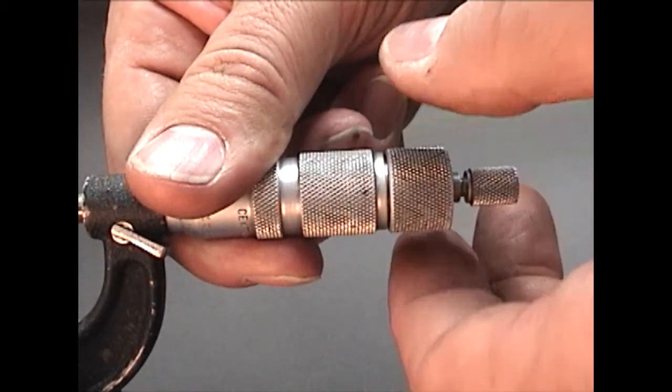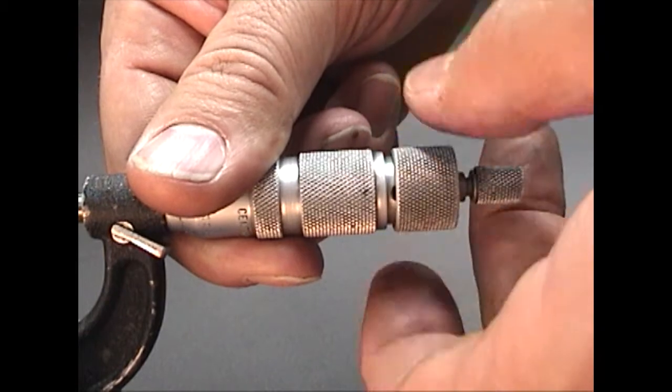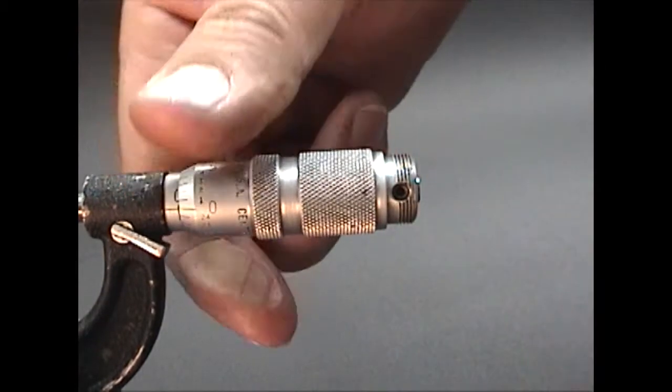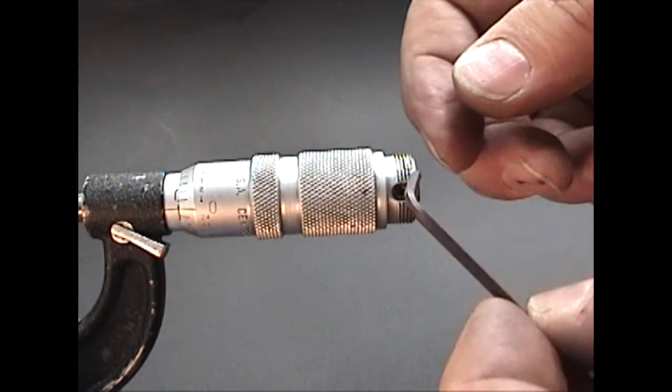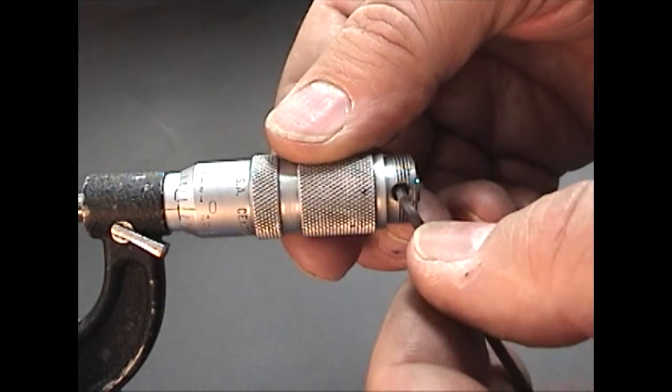The thimble ratchet cover unscrews from the thimble. This exposes the thimble set screw. Loosen the set screw.